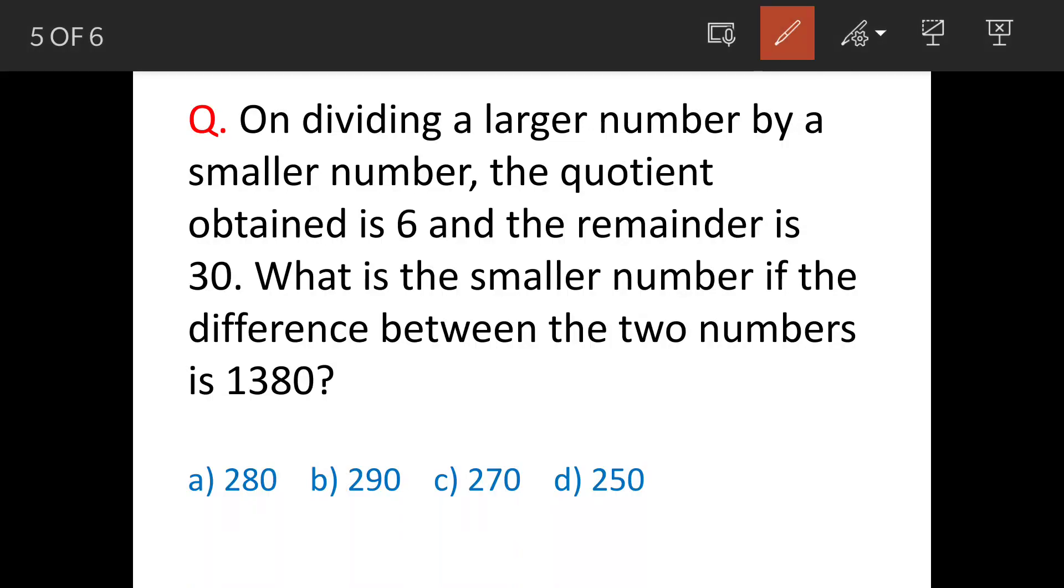The question says on dividing a larger number by a smaller number, the quotient obtained is 6 and the remainder is 30. What is the smaller number if the difference between the two numbers is 1380?